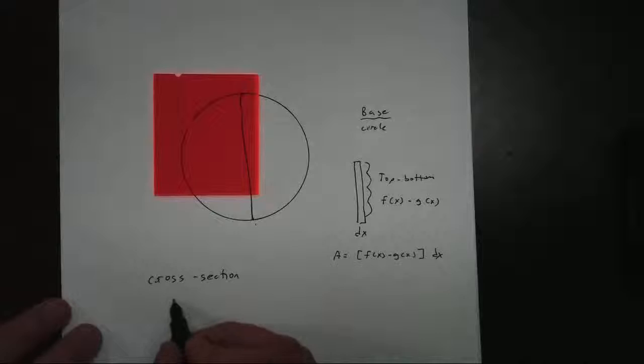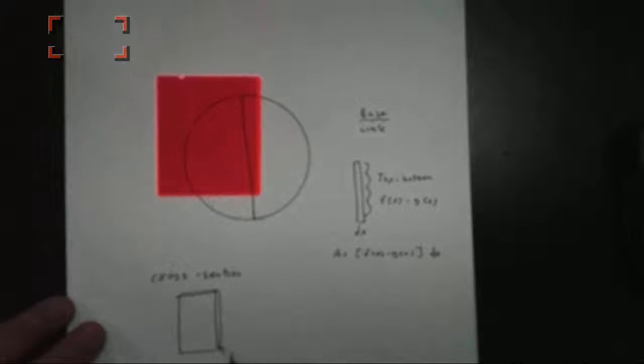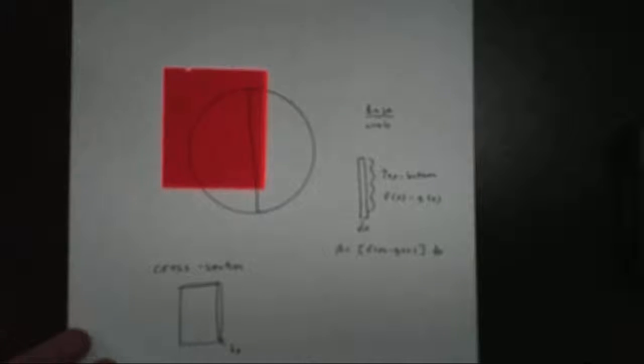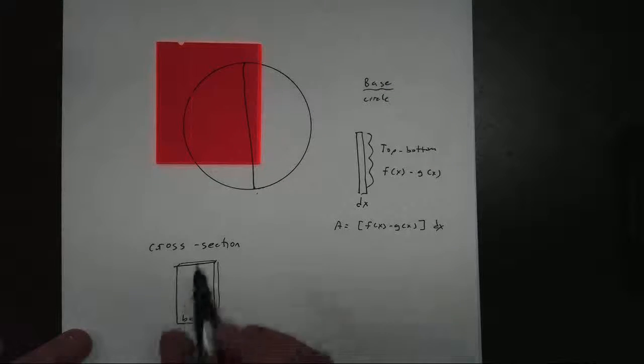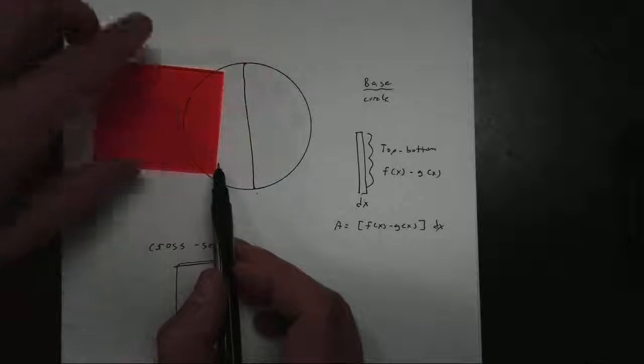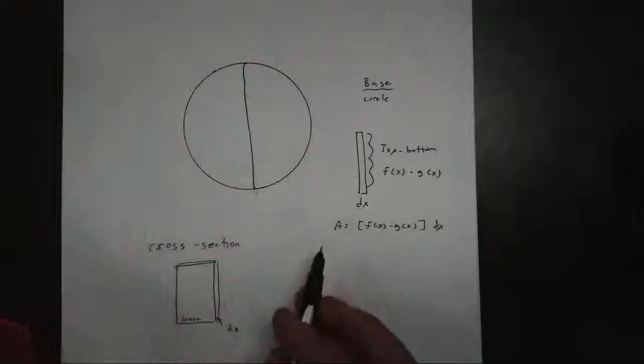So if I draw my rectangle like so, at the very bottom is our base, dx thick. Down here is the base. That's the bottom. Remember that base? That's our cross-section here. It has a base of f(x) minus g(x).